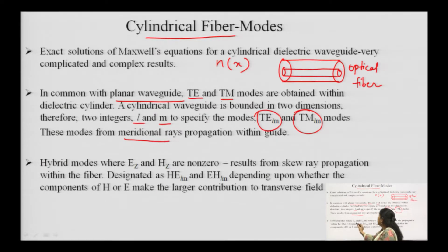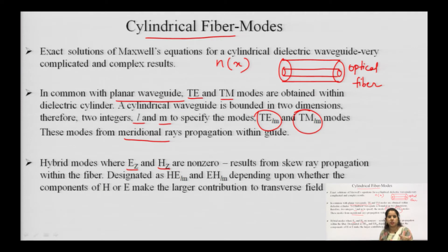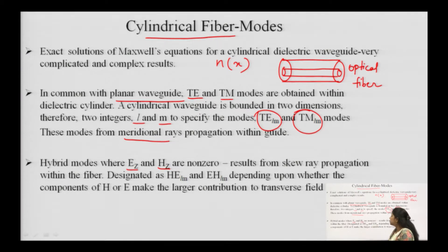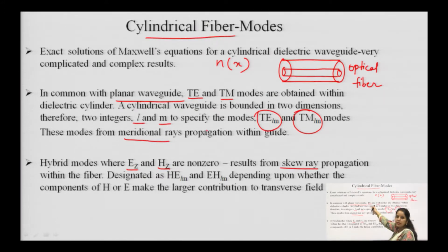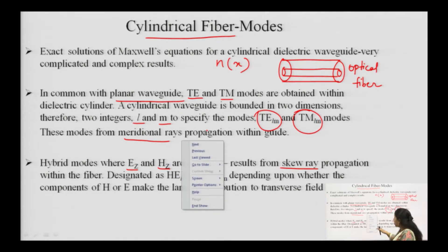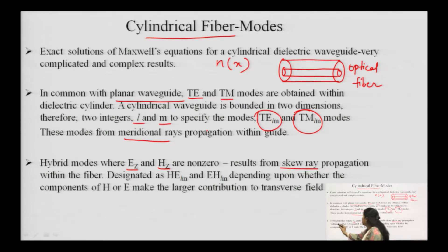For hybrid modes, Ez and Hz are nonzero results. When we considered TE modes, the Ez component is zero; for TM modes, the Hz component is zero. But when both Ez and Hz have nonzero components existing — that condition arises from skew rays — that mode is called a hybrid mode. In hybrid modes, we write HE(l,m) and EH(l,m).